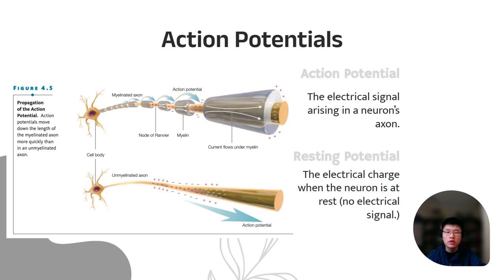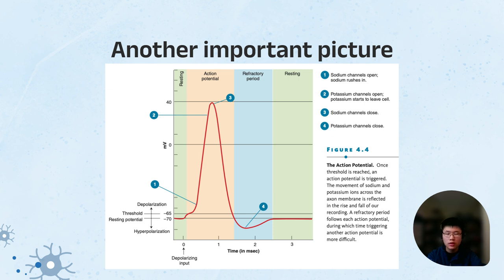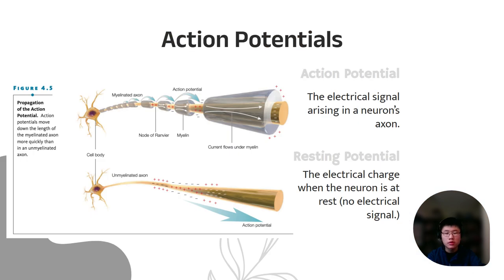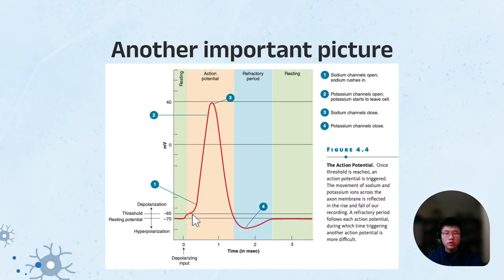Here are action potentials — basically an electrical signal that arises in a neuron's axon. Meanwhile, we also have the resting potential, which is the electric charge when the neuron is at rest, so there is no electric signal. Here is a picture that describes the process of action potentials. First, it has to reach a threshold. After the threshold is reached, potassium kicks in — that's where the action potential is. Then there's a refractory period, where it starts to overcompensate, and eventually returns back to the resting potential.